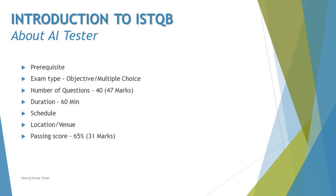Just like the foundation level, you will have 40 questions, but the scoring system is slightly different. Some questions carry additional marks where you need to demonstrate deeper knowledge, and if you are familiar with ISTQB, these are the K3 and K4 level questions — their scores are going to be slightly higher. The total possible marks are 47, and the duration provided to answer all questions is 60 minutes — that is, one hour to answer 40 questions.